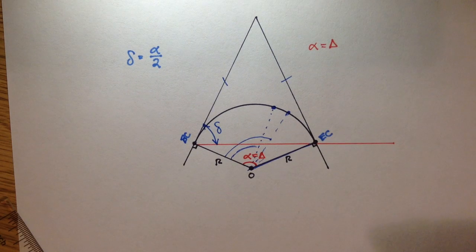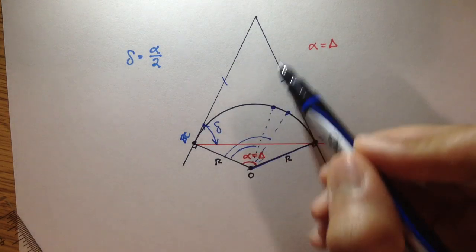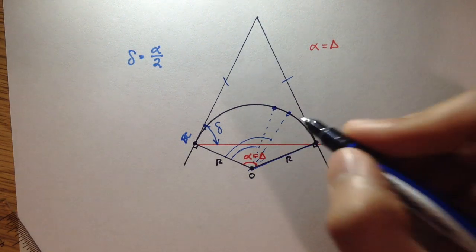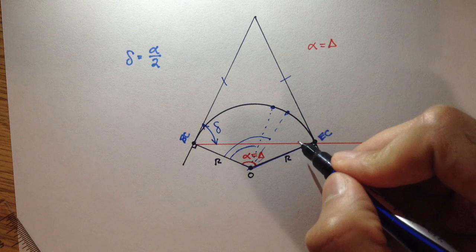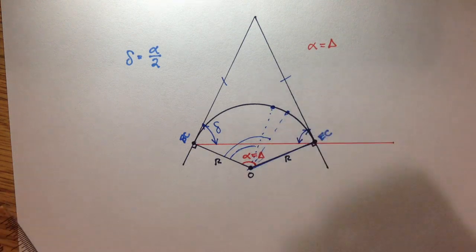An isosceles triangle, by definition, is a triangle that has two equivalent sides, or two sides that are equal in length, and therefore, you'll have two angles. The base angles will be similar in measurement.